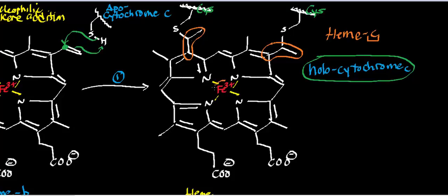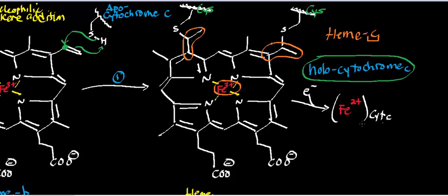It's very important that this iron be in the 3+ state, because as we saw with cytochrome C ubiquinol oxidoreductase, one electron is going to be donated to the iron 3+. One electron is donated from complex 3 into cytochrome C, reducing that iron to the 2+ oxidation state. Then cytochrome C donates one electron into cytochrome C oxidase, which we'll look at in the next video, and it's reoxidized back to the iron 3+ state — hence the name cytochrome C oxidase.